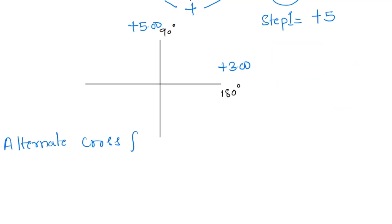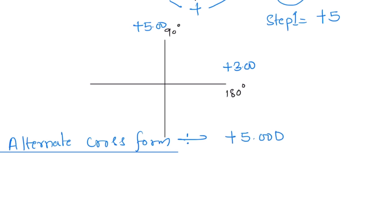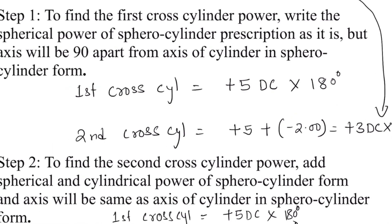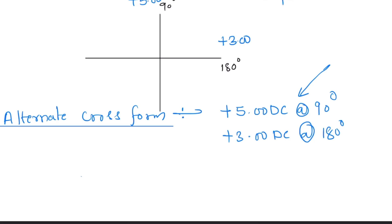There is one more form called the alternate cross form. Here, instead of writing the axis meridian, we specify the power meridian. So it will be written as: plus 5 diopter cylinder at 90 degrees, and plus 3 diopter cylinder at 180 degrees. The 'at' symbol here represents that the power is on that particular meridian, whereas 'x' (axis notation) represents the axis of that particular meridian. When writing the final prescription in this form: plus 5 diopter cylinder at 90 degrees, slash, plus 3 diopter cylinder at 180 degrees.